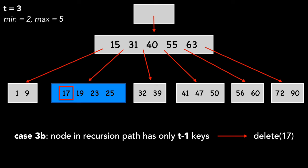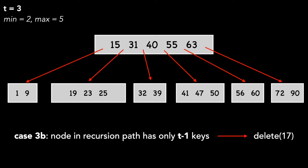Now our node has enough keys, and we progress down the tree, deleting 17 from its node. Our root is also empty, so we remove it, and the tree's height shrinks by 1.